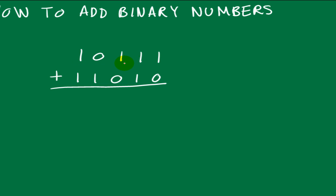So I have this binary number and this other one, and we're gonna go ahead and add it. It's really easy: 1 plus 0 is 1, 1 plus 1 is 2, but in binary that would be 1 0. So the 0 goes here.